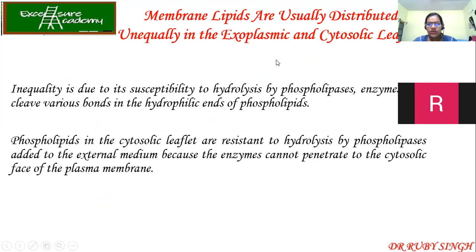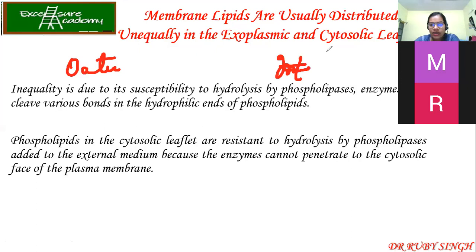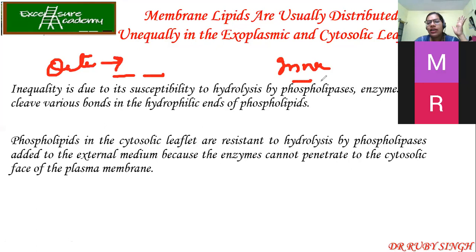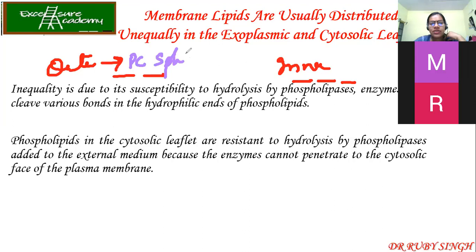Membrane lipids are usually distributed unequally between the two leaflets — this was already discussed. On the outer leaflet, PC and sphingolipids are present. On the inner (cytosolic) leaflet, PI (phosphatidylinositol), PE (phosphatidylethanolamine), and PS (phosphatidylserine) are rich. This inequality is due to their susceptibility to hydrolysis by phospholipases, which are enzymes that cleave various bonds in the hydrophilic ends of the phospholipids.